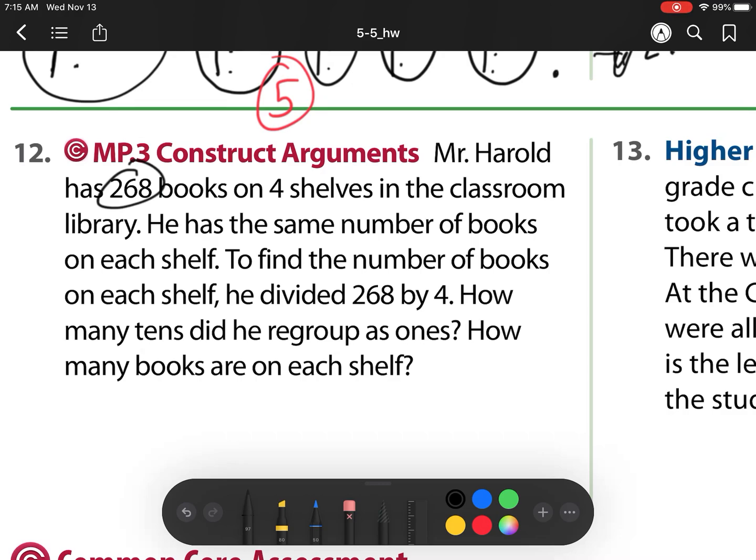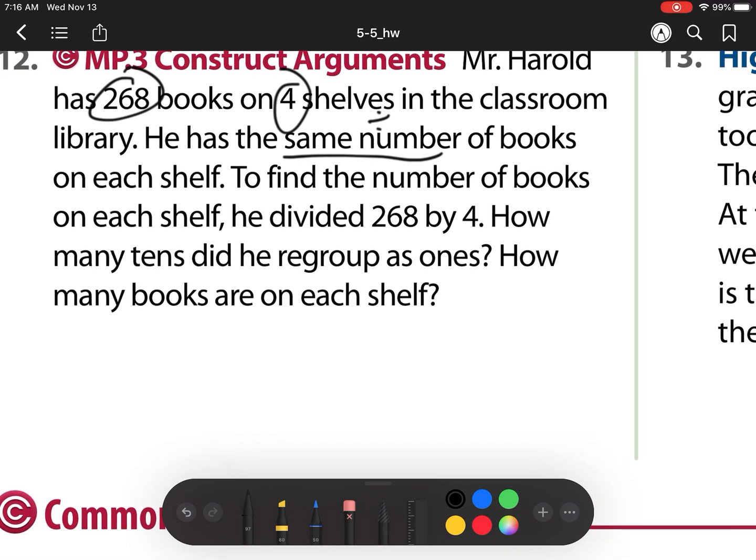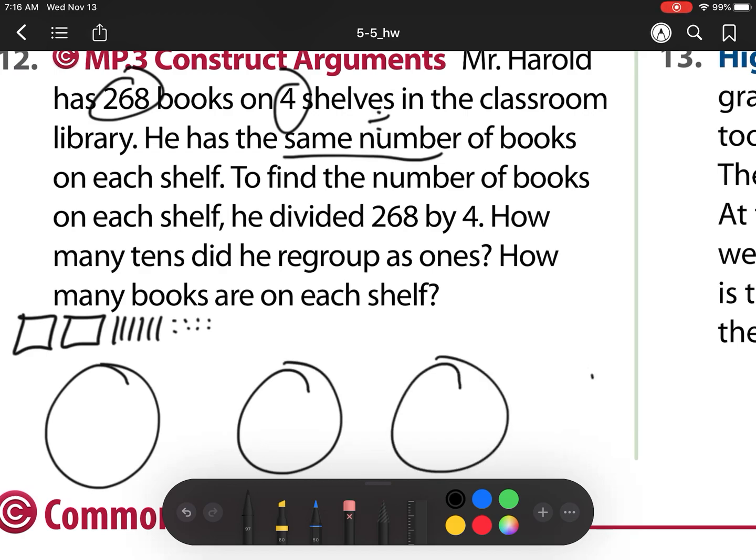Our next one, Mr. Harold has 268 library books on 4 shelves in the classroom. He has the same number of books on each shelf. So that same is that division. To find the number of books on each shelf, he divided 268 by 4. How many tens did he regroup as ones? How many books are on each shelf? Well, what I'm going to do is I have 200. Then I have 6 tens. And 8 ones. So let's check. I have 4 groups. So that's 1, 2, 3, 4. I cannot split these hundreds up into 4 groups. So I'm going to have to exchange them for 10 ones. I'm sorry, 10 tens. So my first one is 1, 2, 3, 4, 5, 6, 7, 8, 9, 10. Then I have another of 1, 2, 3, 4, 5, 6, 7, 8, 9, 10. So I have 10 and 10, which is 20, plus these 6 is I have 26. So let's regroup them.